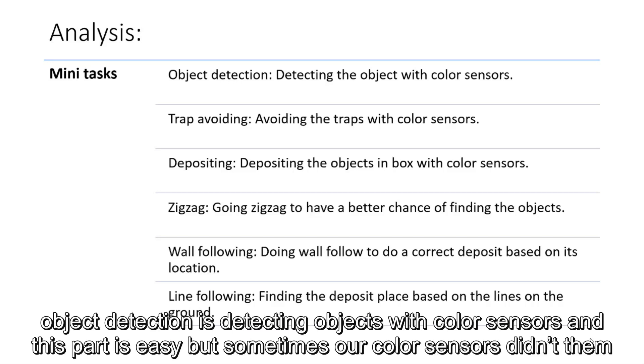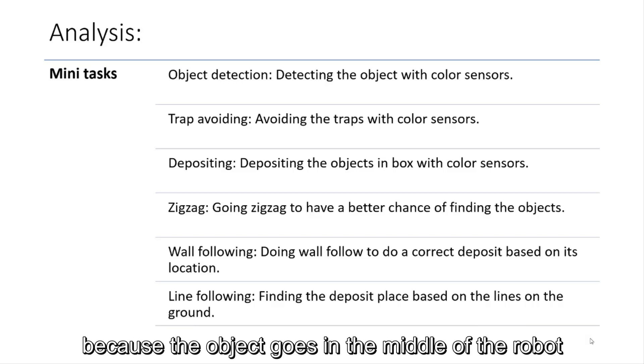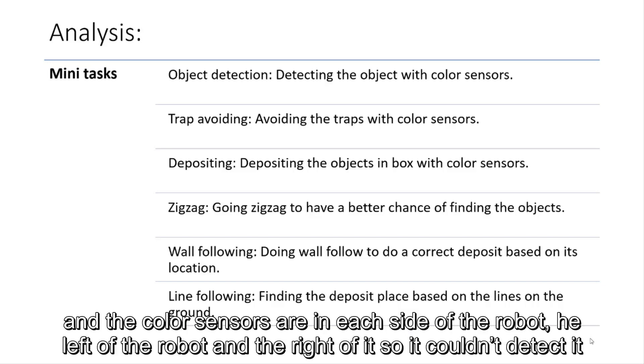but sometimes our color sensor didn't detect them because the object goes in the middle of the robot, the color sensor, or in each side of the robot, on the left of the robot, and right of it. So it couldn't detect it.